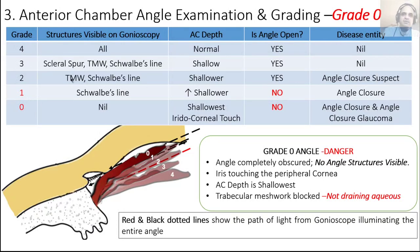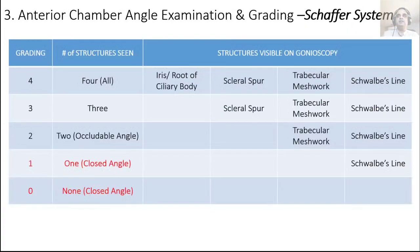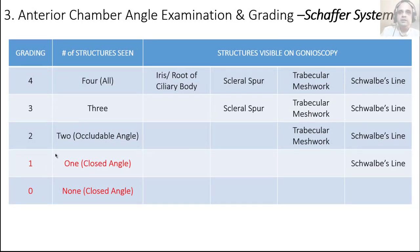To summarize the Schaefer grading: grade 4 and 3 angles are normal; grade 2 is occludable — a concern because it might close; grade 1 and 0 are closed angles. This table shows the number of structures seen, which structures are seen, and how the angle is graded. Grades 1 and 0 are closed; grade 2 is an occludable angle that can lead to closure.